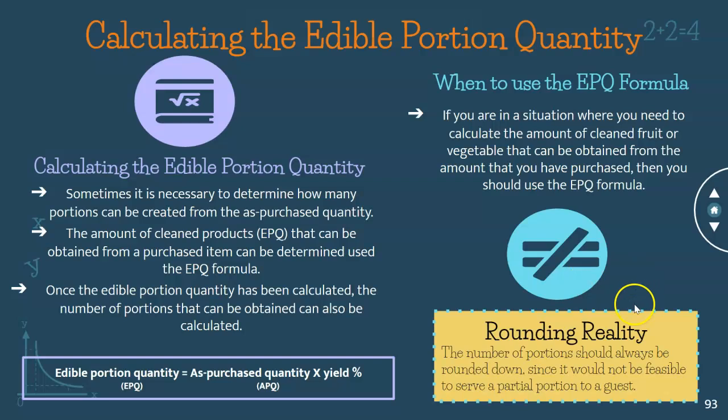Regarding the rounding reality: the number of portions should always be rounded down, since it would not be feasible to serve a partial portion to a guest.